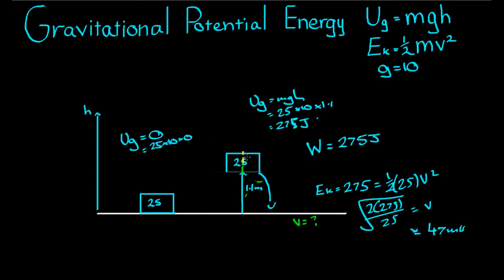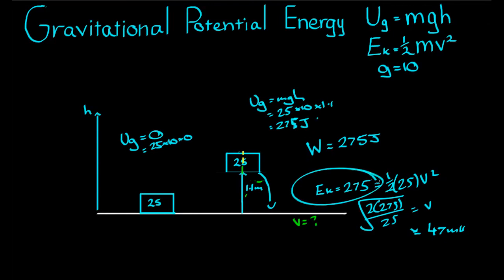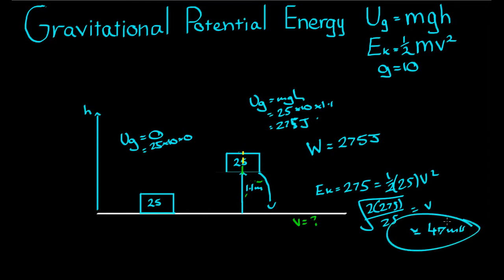Notice: if we kept lifting the object higher, the height would become greater, the gravitational potential energy would become greater, and therefore the kinetic energy upon impact would also become greater, giving us a higher velocity as it hits the ground.